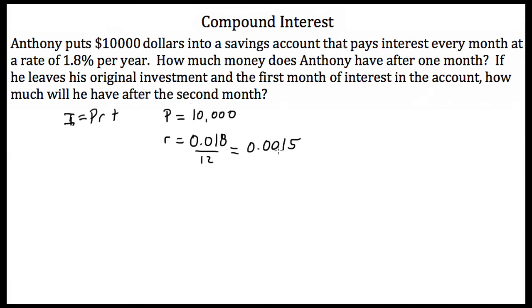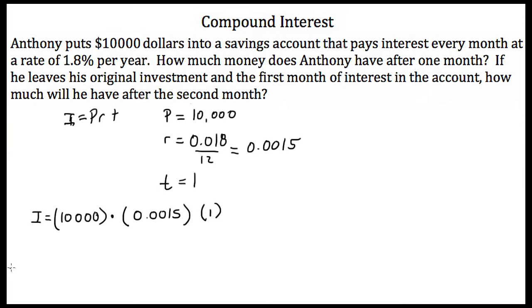This is our interest rate per month. We're only worried about the first month, so T is equal to 1. Plugging in: I is equal to 10,000 times 0.0015 times 1. In the first month, Anthony earns $15 in interest. So after one month, $15 plus the original $10,000 gives us $10,015.